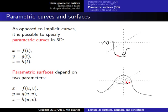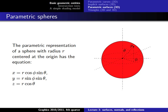The more general case is parametric surfaces, which require two parameters to describe the shape of the surface. Let's look at some examples.